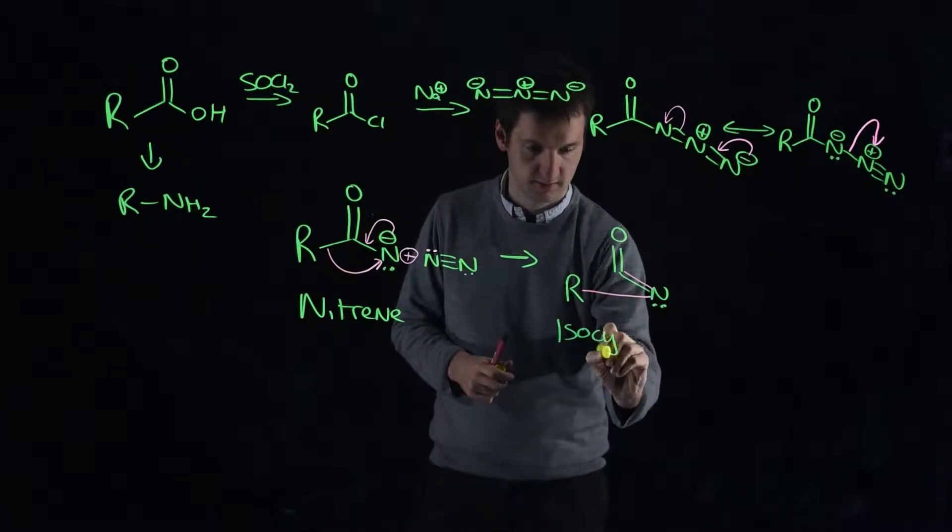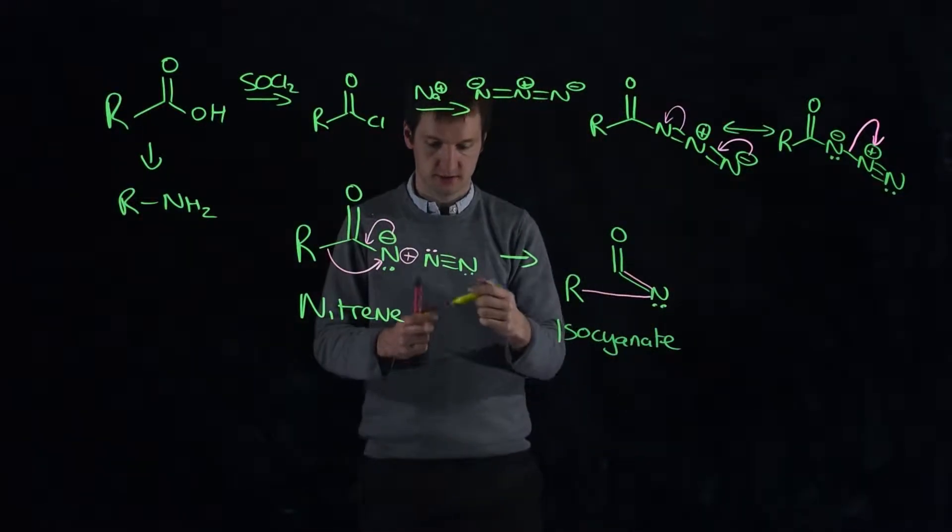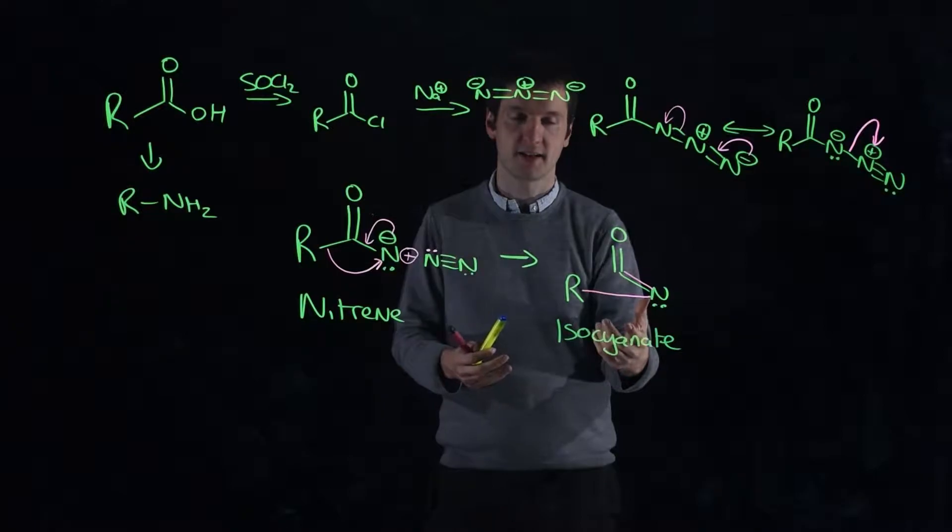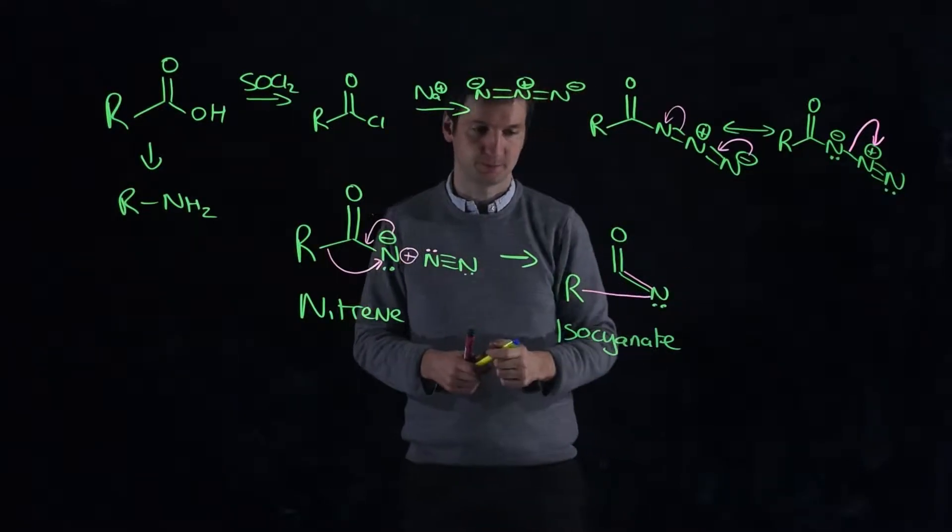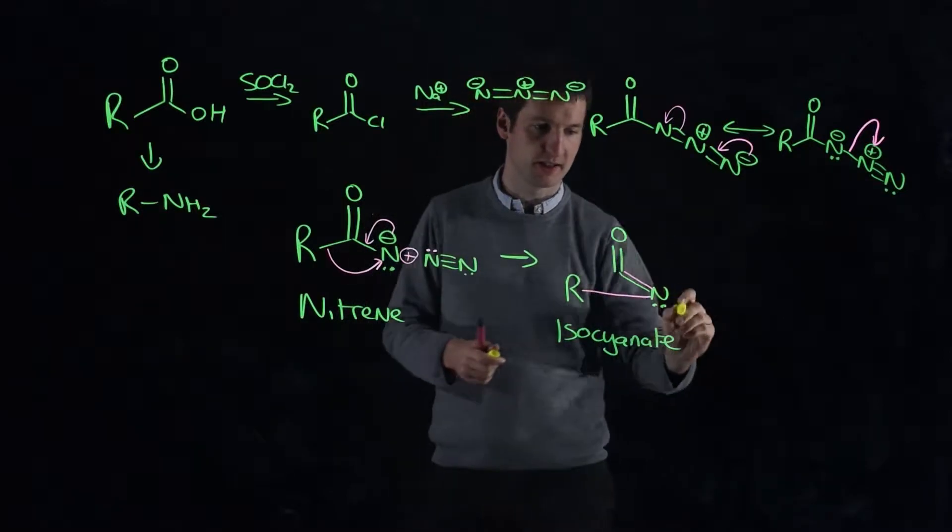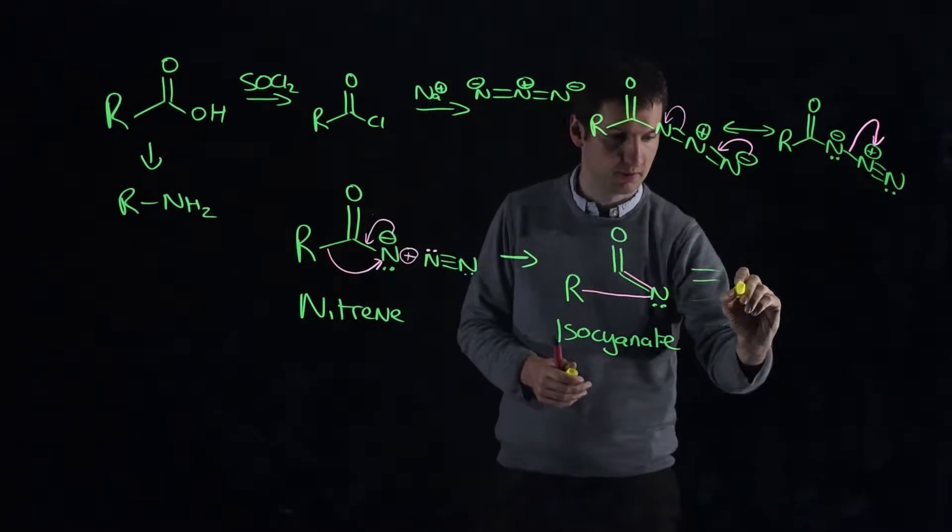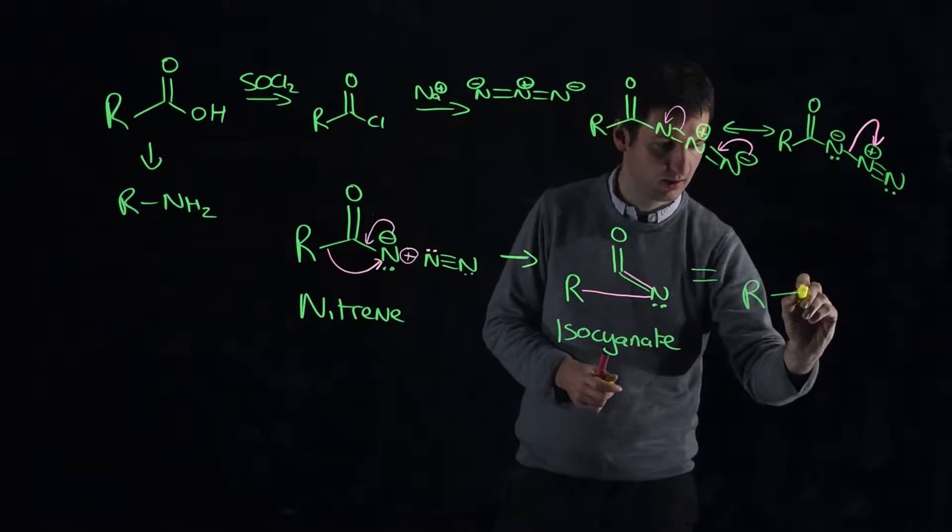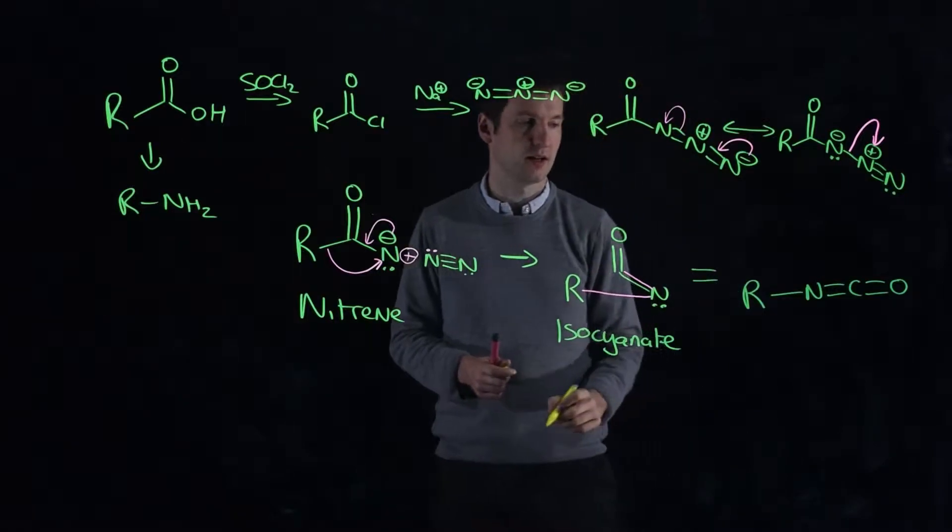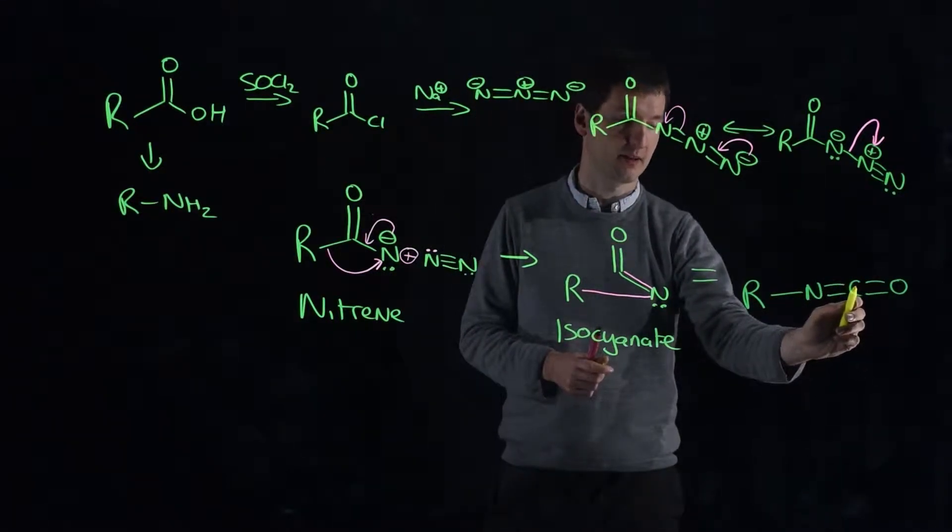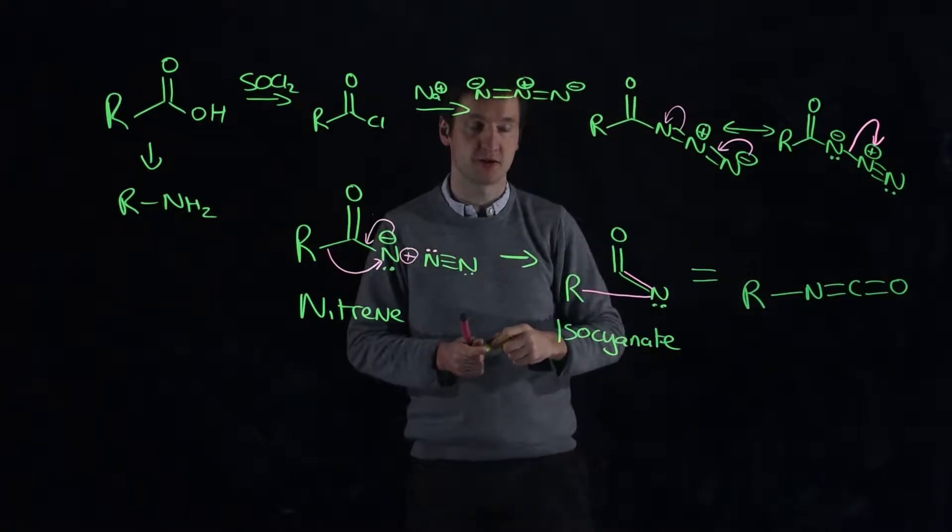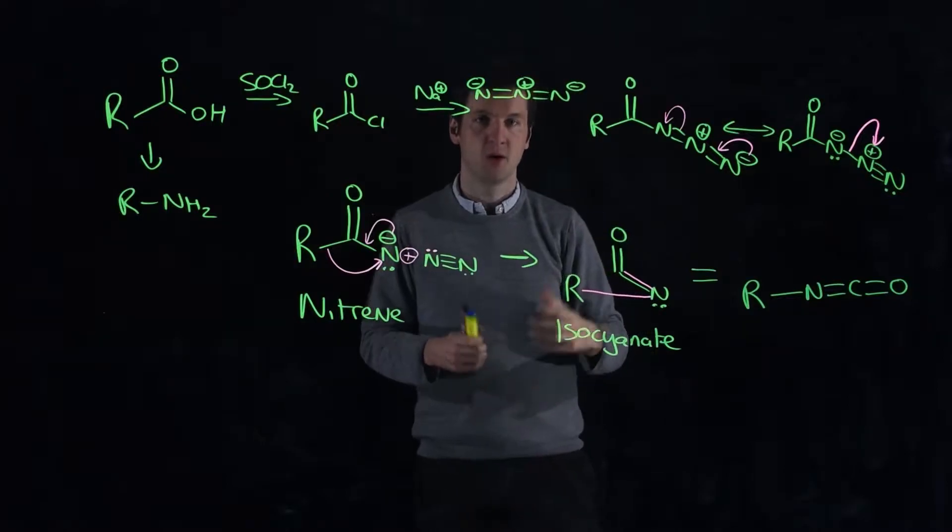This product that we've made is an isocyanate. Isocyanates are quite reactive - you have a carbon in the middle double bonded to an oxygen that makes it electrophilic, but it's also double bonded to another nitrogen at the same time, so it's going to be very electrophilic. I'm going to redraw this with better looking bond angles - this is actually sp hybridized carbon in the middle, perfectly linear on both sides, nitrogen is sp2 hybridization, oxygen is sp2 hybridization. We've got quite a reactive intermediate here.